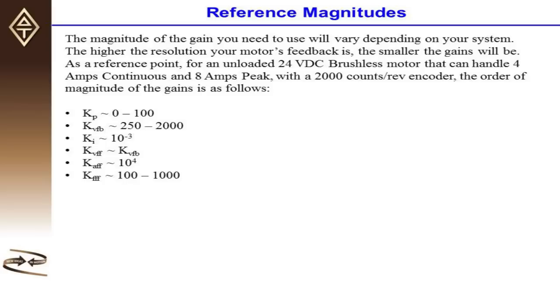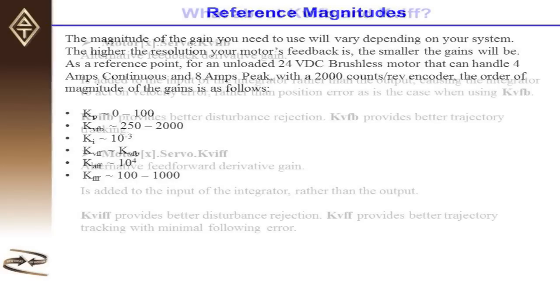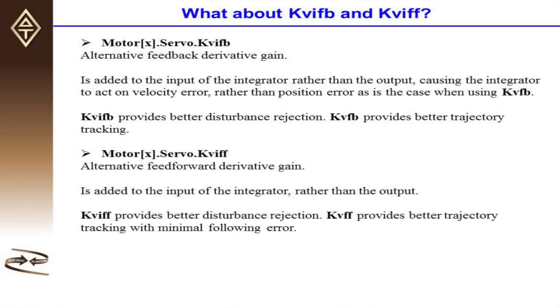KVFB is roughly between 250 and 2000. KI is on the order of 10 to the negative 3. KVFF is almost always the same magnitude as KVFB. KAFF is on the order of 10,000. KFFF is usually between 100 and 1000 for this particular kind of motor, just as a reference point for you.